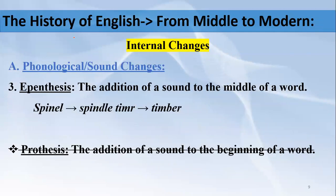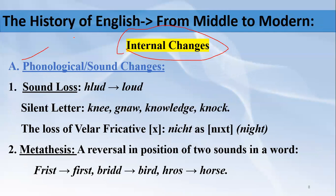Starting with the first type of internal change — phonological change. Many phonological changes took place when the Middle English period started and the Old English began developing with the passage of time. Phonological changes means changes in the pronunciation and sounds of English. The first change was sound loss, the second was metathesis, and the third was epenthesis.